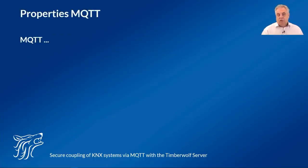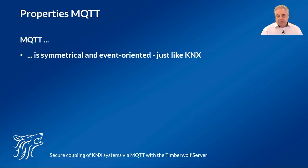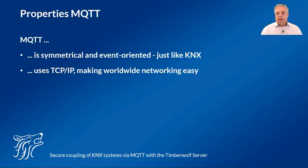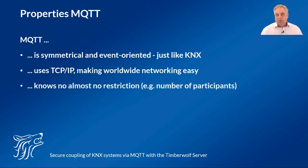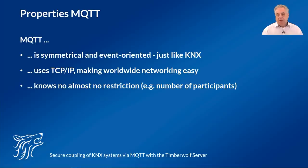Let's take a brief look at the properties of MQTT. The protocol is symmetrical and event-oriented, just like KNX. MQTT uses TCP, so worldwide networking via IP networks is really easy. The number of participants is arbitrary, a maximum bandwidth is not specified, and it works well even over poor connections — up to 260 MB can be transferred with a single message. In practice, performance depends on the respective clients, the broker, and the IP networks. HiveMQ's MQTT broker achieved a throughput of 3 billion messages per hour in a test with 10 million MQTT clients.